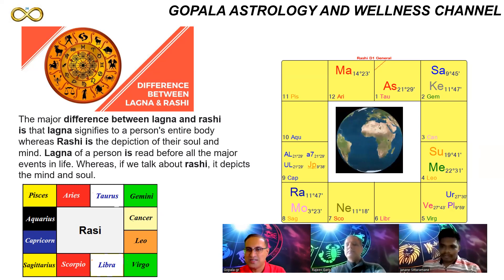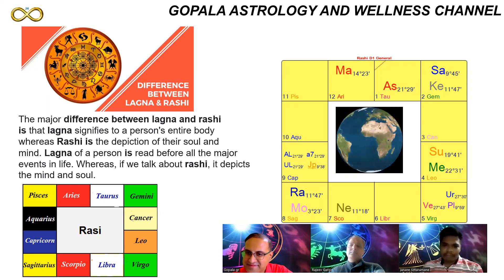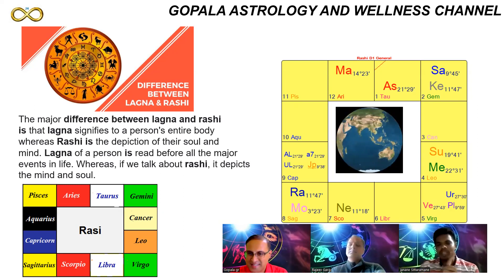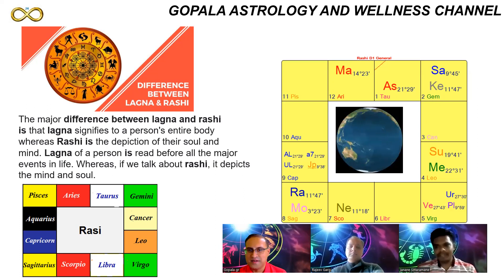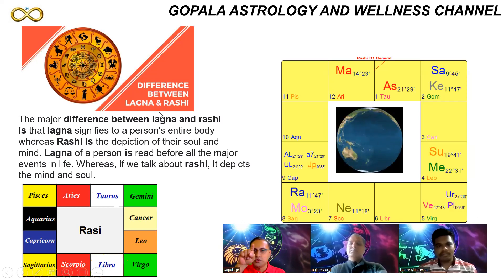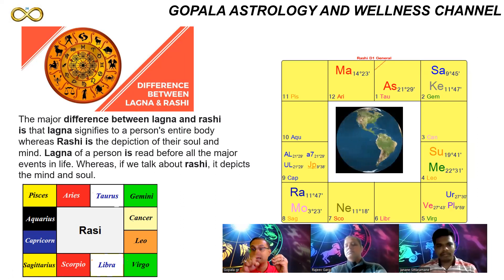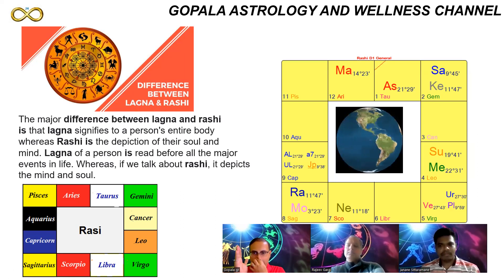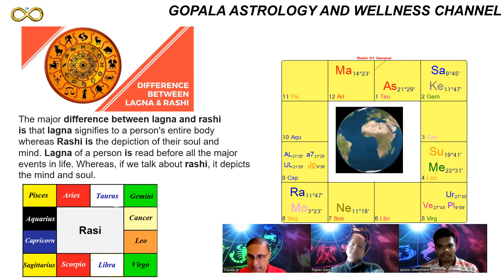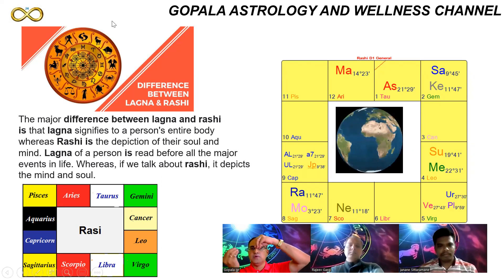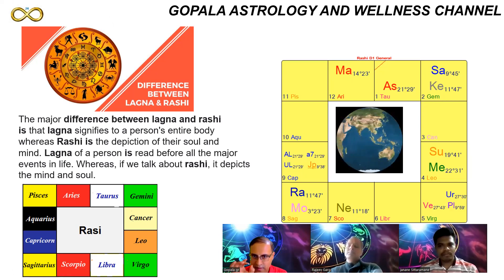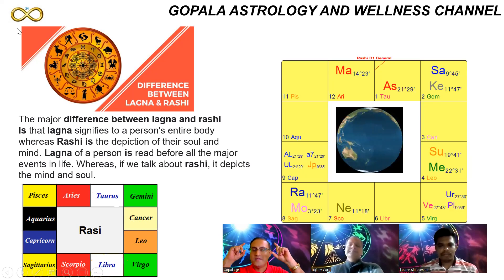Our sages followed a geocentric system — assuming Earth is stationary and the planets move around it, because we feel their magnetic influence on Earth. This is different from the heliocentric system used in Western astrology, where the Sun is at the center. From an astrological point of view, we live on planet Earth, not on the Sun. The Moon's nakshatra at birth determines the first maha dasha in your horoscope.